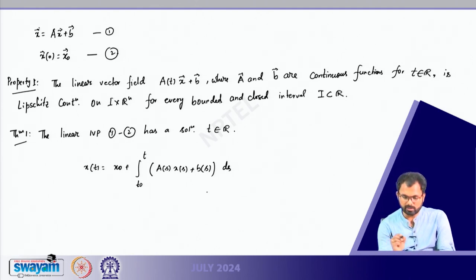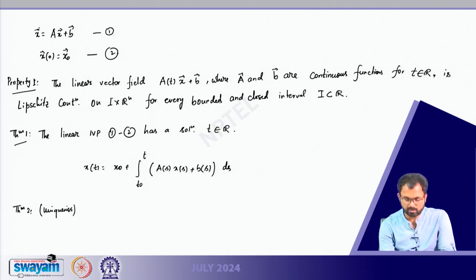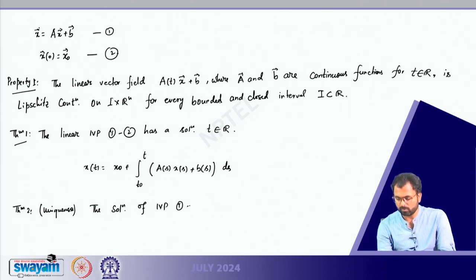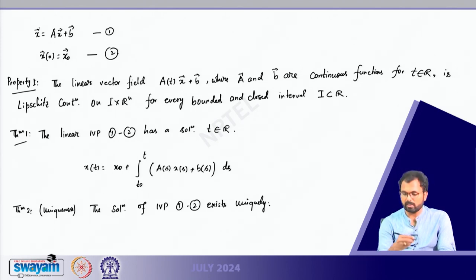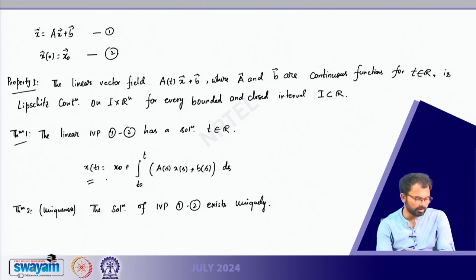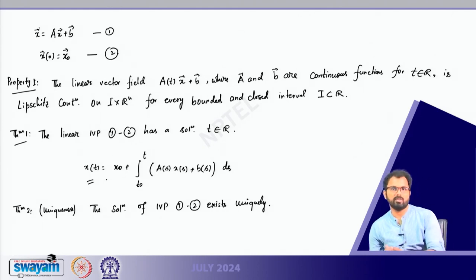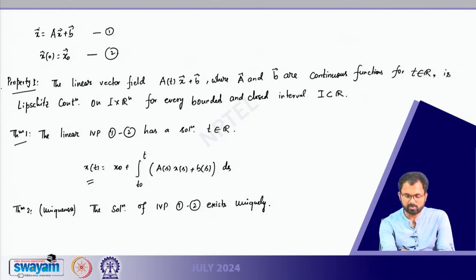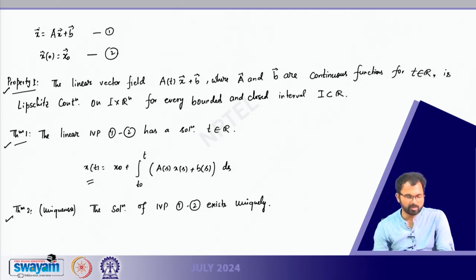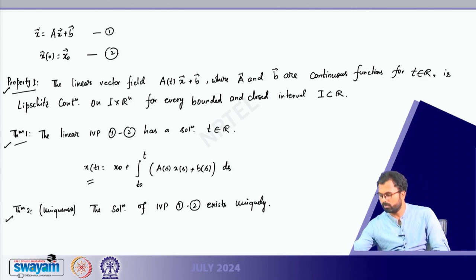For global existence, the idea is to write the solution x(t) as x₀ plus the integral from t₀ to t of [A(s)x(s) + B(s)] ds, take the norm on both sides, and show the right-hand side is bounded. Theorem 2 is about uniqueness: the solution of initial value problem (1)–(2) exists uniquely. We take two solutions x₁ and x₂ with the same initial condition and use Gronwall's inequality to prove uniqueness.